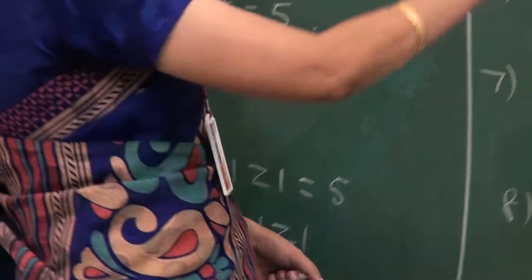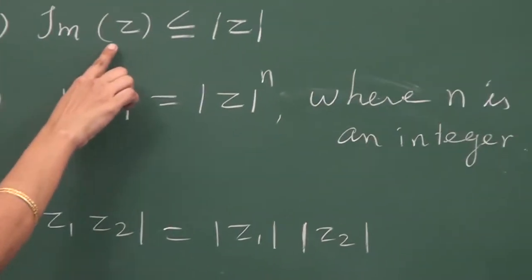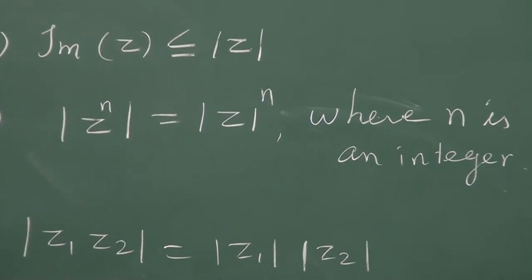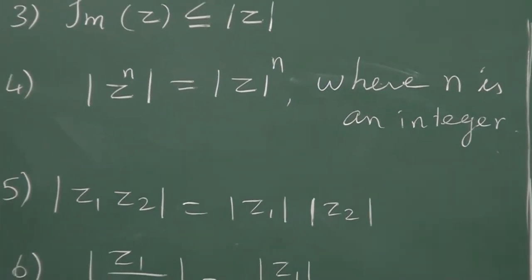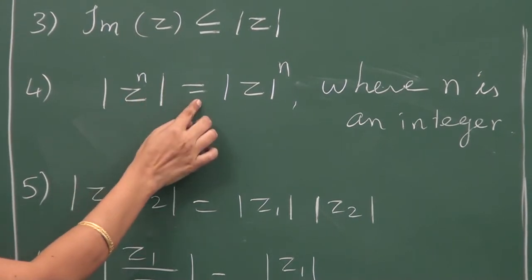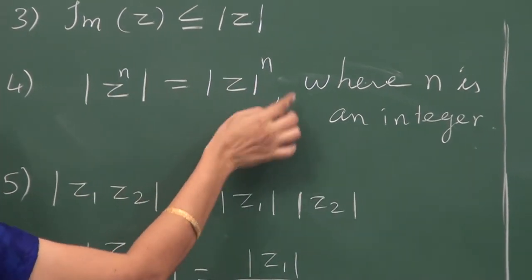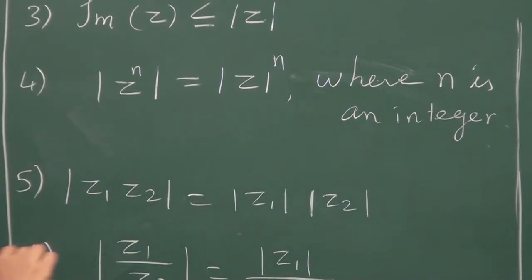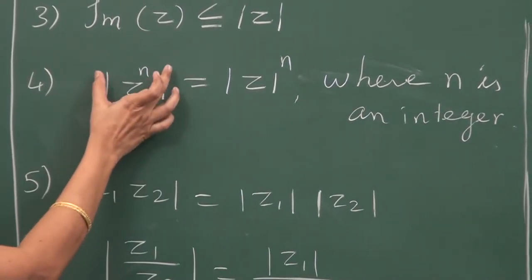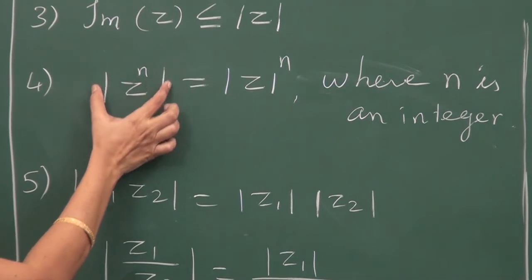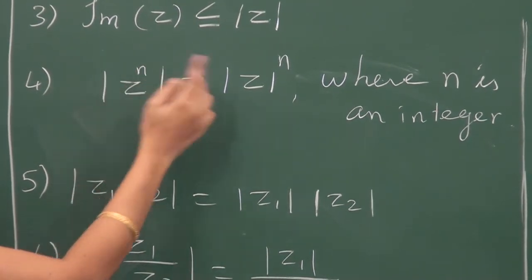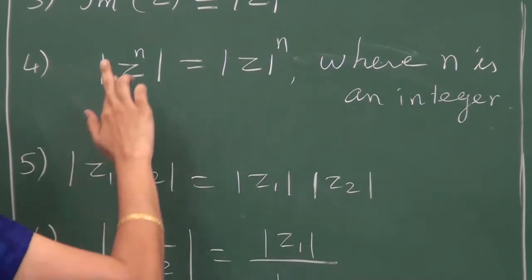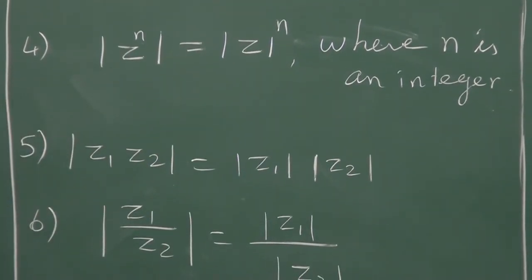Similarly, we can prove the third property: the imaginary part of z is less than or equal to the modulus of z. The fourth property is: modulus of z to the power n equals modulus of z, the whole raised to the power n, where n is an integer. This means that on the left-hand side we raise to power n first and then take the modulus, while on the right-hand side we take the modulus first and then raise to power n — and both are equal.